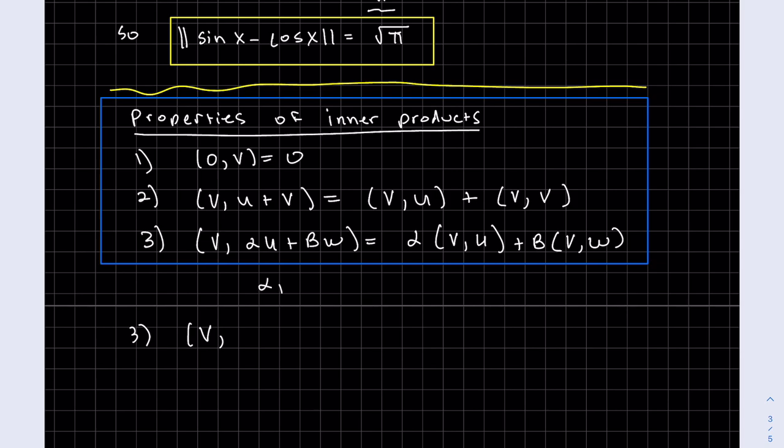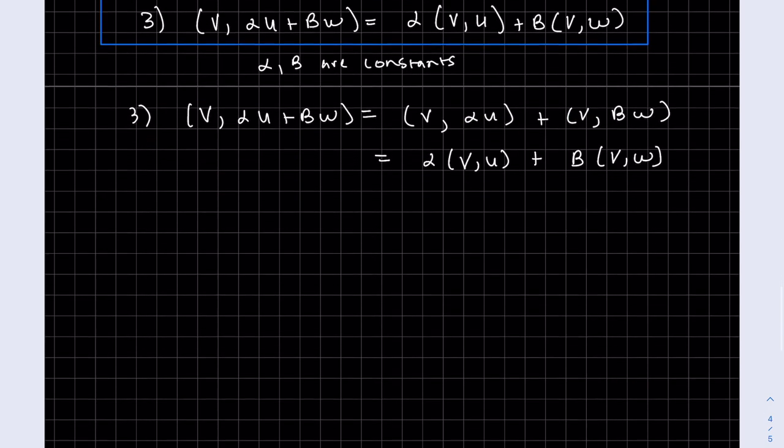I'm going to work out this third property and when you get to understand these better you'll be able to do it easier too. Alpha and beta are constants. Use property number 2. And then we use these are constants we can pull them out. And there we have it.